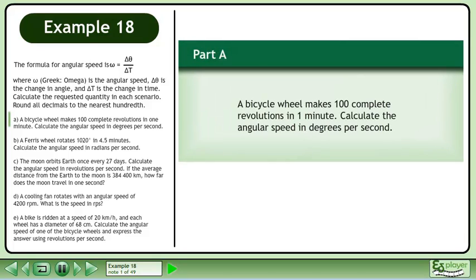The formula for angular speed is omega equals delta theta over delta t, where omega is the angular speed, delta theta is the change in angle, and delta t is the change in time. Calculate the requested quantity in each scenario. Round all decimals to the nearest hundredth.